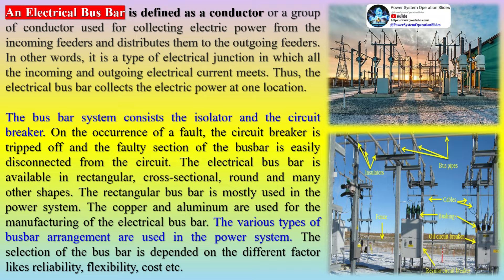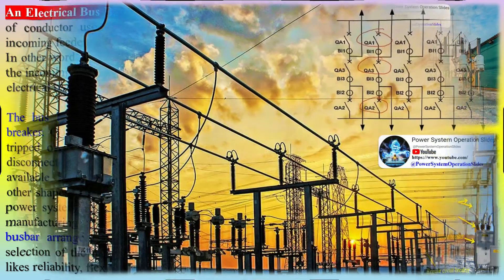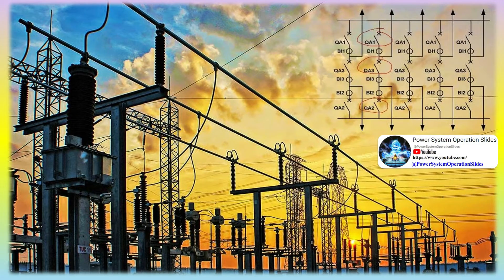The busbar system consists of the isolator and the circuit breaker. On the occurrence of a fault, the circuit breaker is tripped off and the faulty section of the busbar is easily disconnected from the circuit. The electrical busbar is available in rectangular, cross-sectional, round and many other shapes. The rectangular busbar is mostly used in the power system. Copper and aluminum are used for the manufacturing of the electrical busbar.